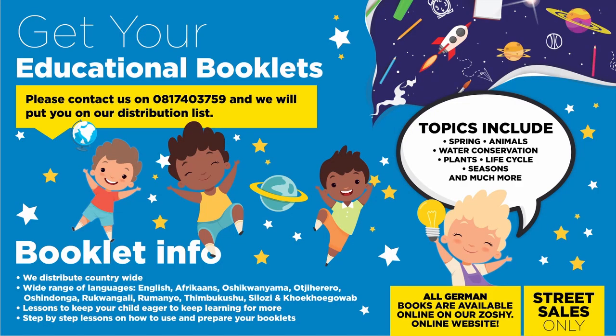Do you have children in the age range of 5 to 6 years and want to participate in our school booklet program? Please contact us on 08174-3759 and we will put you on our distribution list for the attention of pre-primary schools. Topics include family, summer, culture, traditions and houses, transport and communications, occupations, autumn and more. We distribute countrywide in over 10 different languages.